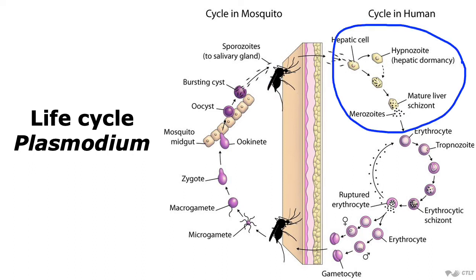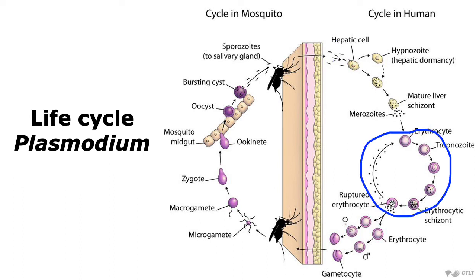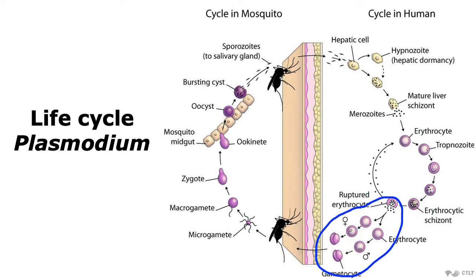Once in the human host, the Plasmodium goes to the liver and infects the liver or hepatic cells. In the infected hepatic cells, Plasmodium undergoes multiple fission to give rise to merozoites that are released from the mature liver meront or schizont. The merozoites can then infect red blood cells or erythrocytes, and within the erythrocytes they can again undergo merogony to give rise to many merozoites that can continue the infection process. However, some of these erythrocytes can undergo gametogony, and the Plasmodium in those erythrocytes will ultimately give rise to male and female gametes.